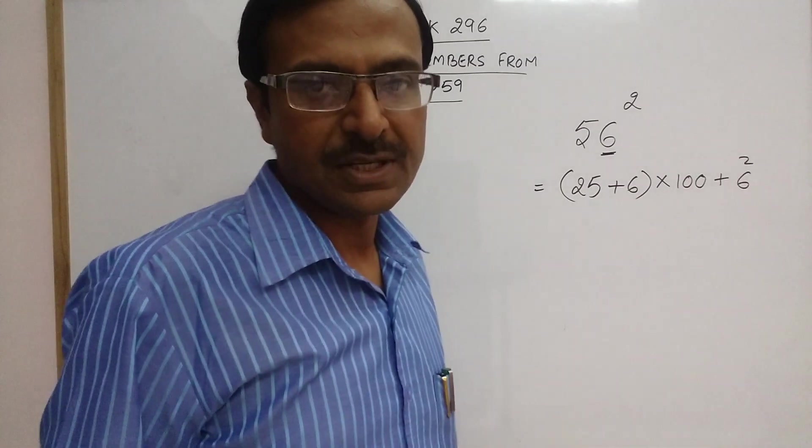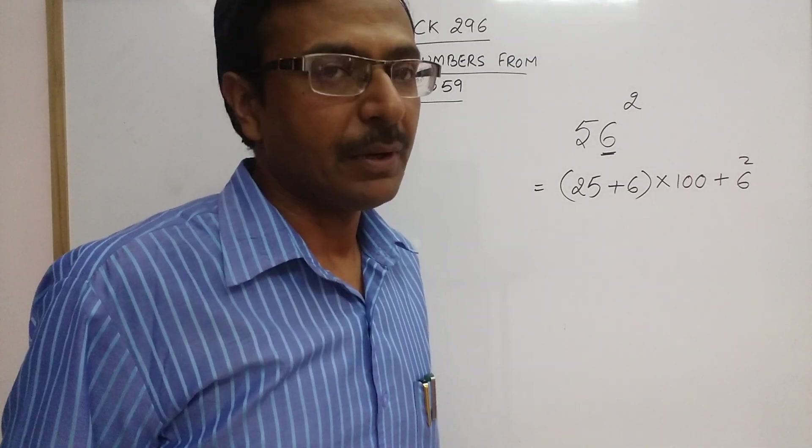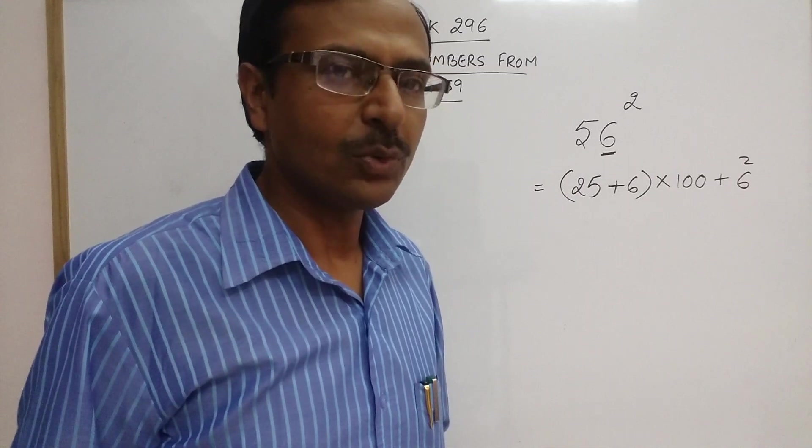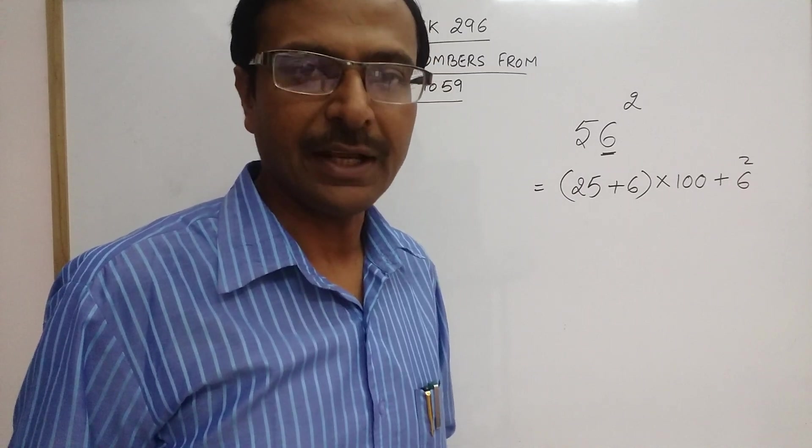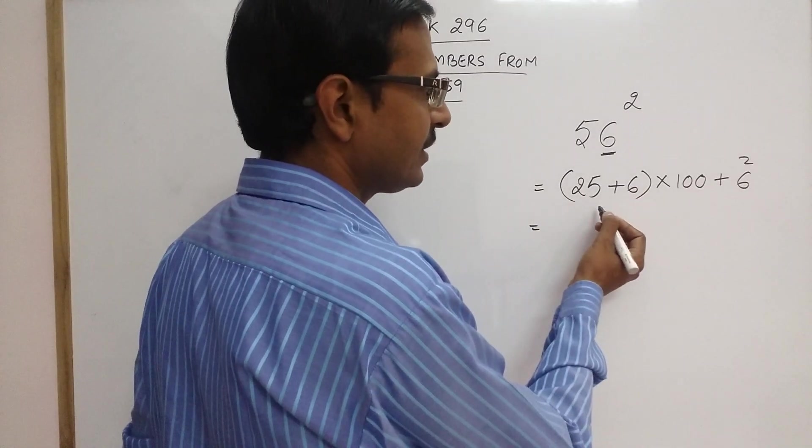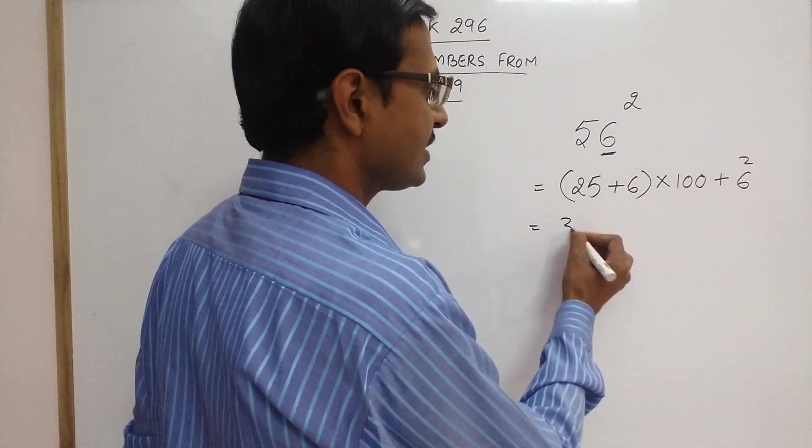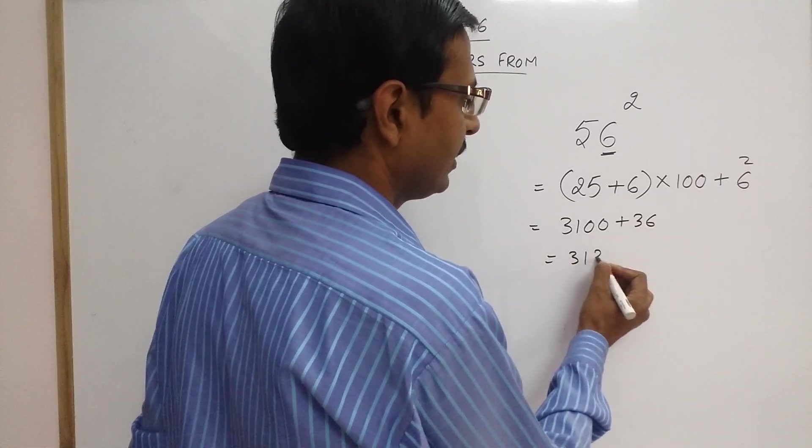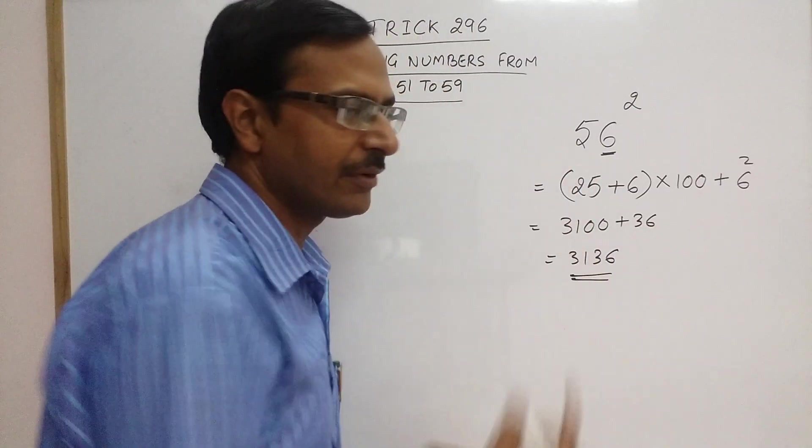I have written all the steps. It might look complicated, but with practice of 3 minutes you will be able to do all the squares of 51 to 59 orally. So 25 plus 6 is 31, and 31 into 100 is 3100 plus 36. You get the answer as 3136, which is the square of 56.